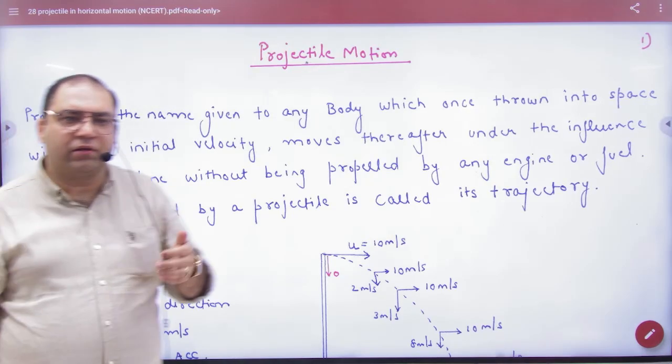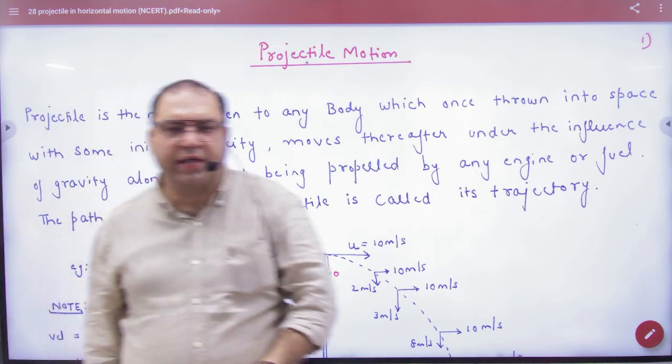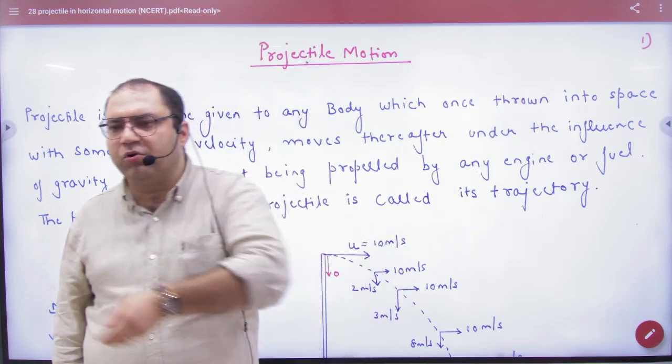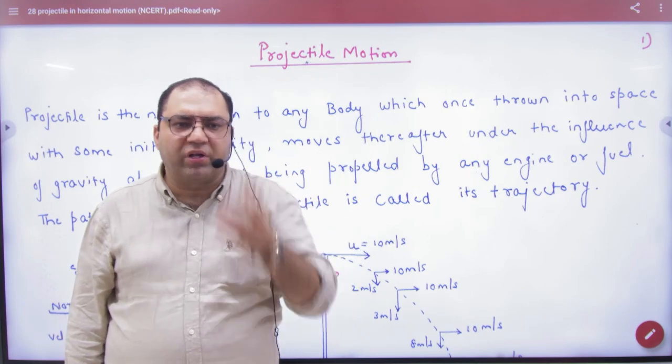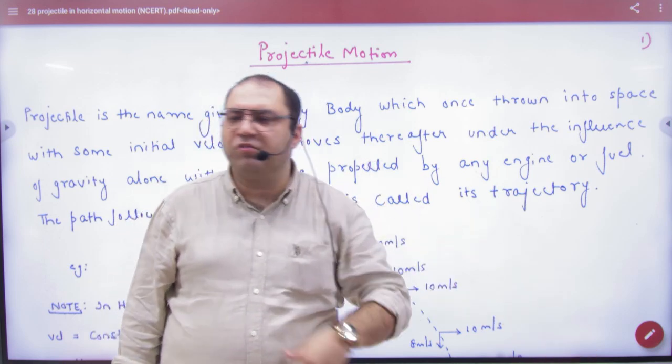In projectile motion, we learned - I asked you what is projectile. I said if any body is on top of the building, or if you project from ground, then it will be affected by gravity. Because of gravity, it will follow the parabolic path, so this is projectile.